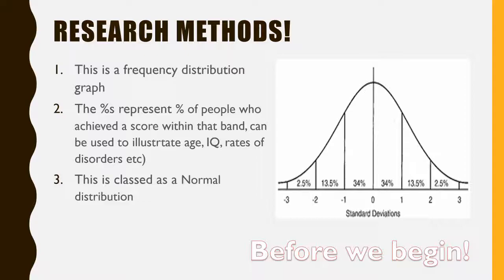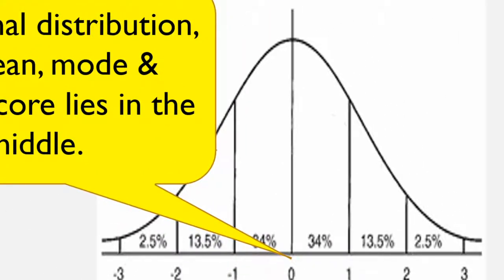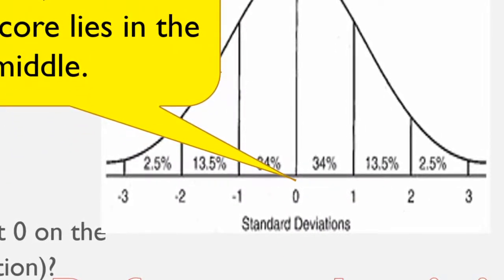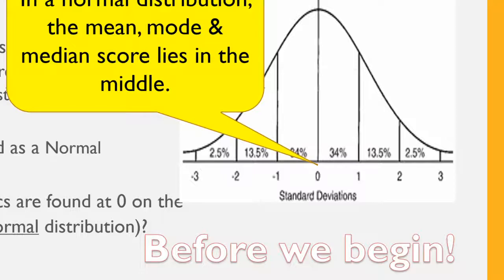We use frequency distribution graphs to illustrate a massive range of skills, traits, and behaviors. For example, we could illustrate age. We could also do rates of disorders, which is what we're going to be using it for. This distribution graph here is what we would call a normal distribution. It tells us what percentage of the population is experiencing particular disorders. In a normal distribution, the mean, the mode, and the median scores lie in the middle. Anybody who falls outside of that range is deviating from the statistical norm. Everybody who is in this central section here, one standard deviation away from the mean, would be classed as normal.